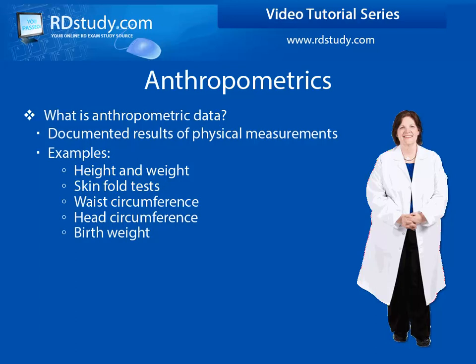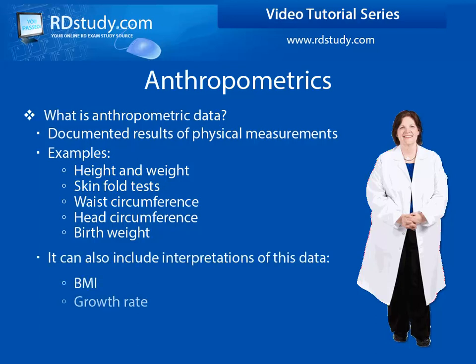It is very important to understand that there are some calculations that are considered anthropometric data. Things such as BMI, changes in growth rate, or the percentage changes in weight — these would all be considered calculated values related to the direct measurements, but still would be considered anthropometric data.